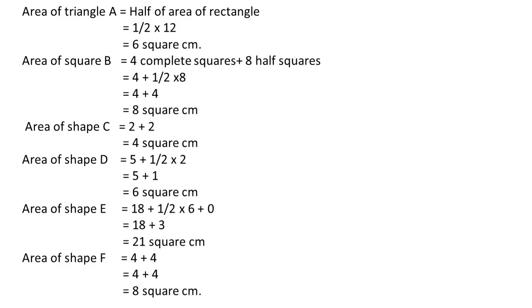Area of shape D is equal to five plus half into two. Five plus half into two. Half into two is one. So, five plus one square is equal to six square centimeter.